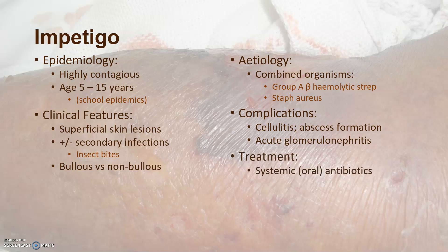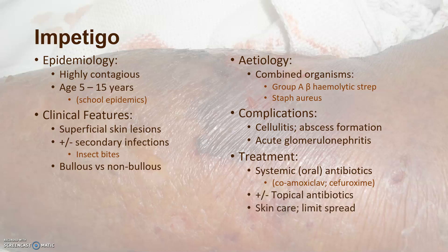Treatment can be systemic — if widespread, systemic antibiotics are needed. Remember, you need to cover Staph aureus with your prescribed antibiotics. Topical antibiotics can also be used. It's important to provide appropriate skin care, limit spread, and prevent precipitants — particularly in tropical countries, prevent insect bites.